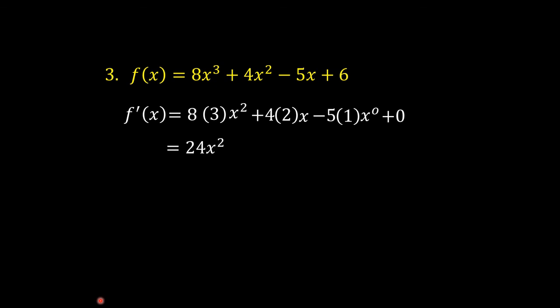Simplify: 8 times 3 is 24, so we have 24x squared. 4 times 2 is 8, so we have plus 8x. x raised to 0 is equal to 1, so this is minus 5 times 1 times 1, which is 5, and then plus 0, so we have just minus 5. The answer is 24x squared plus 8x minus 5.